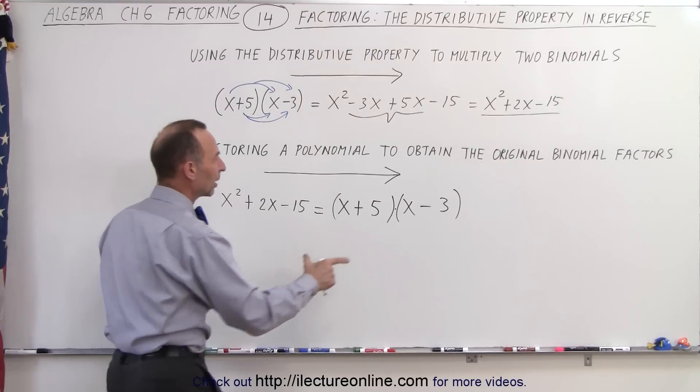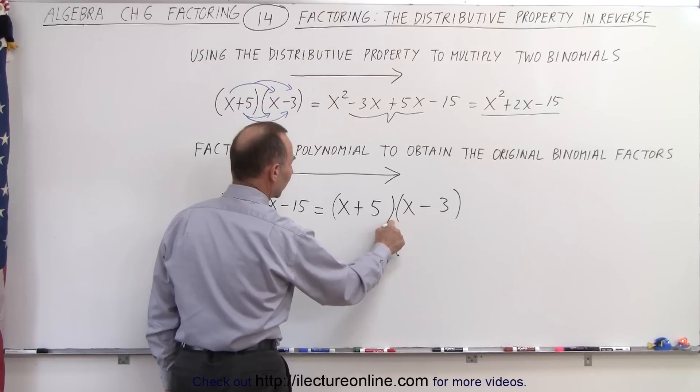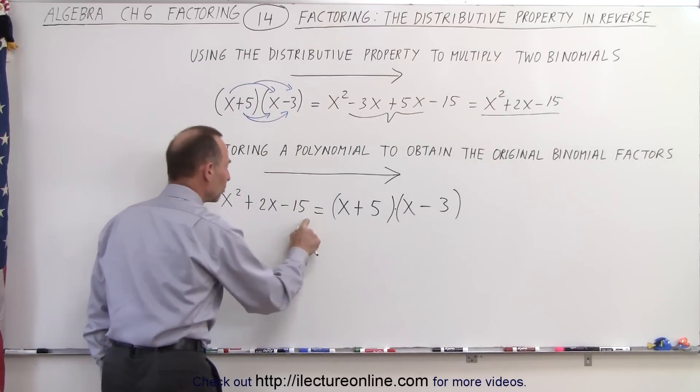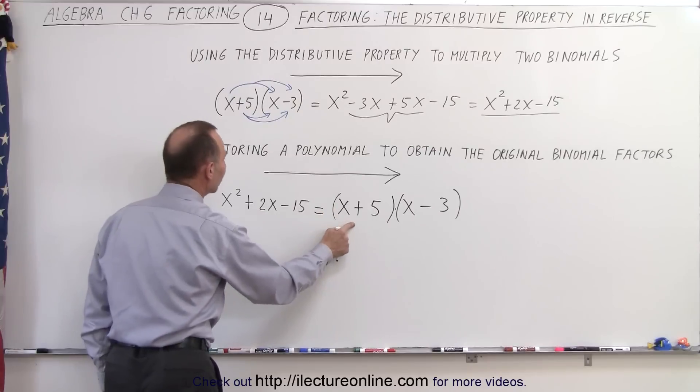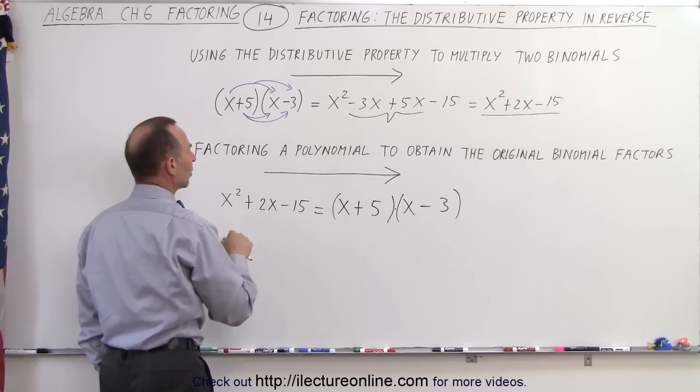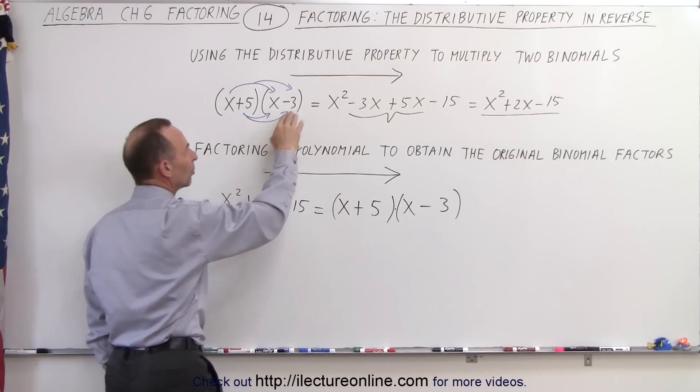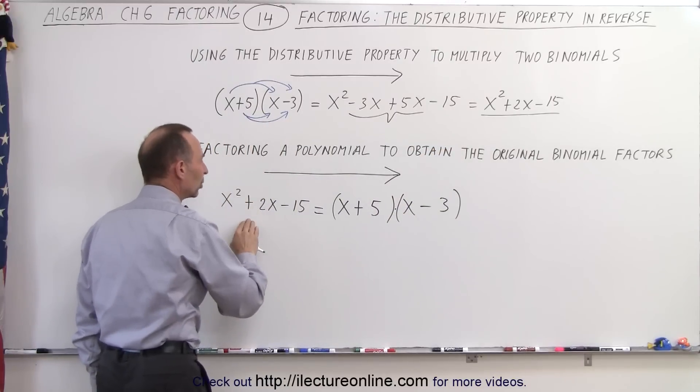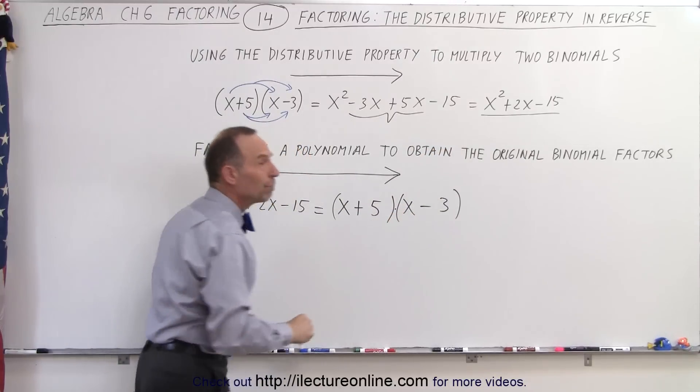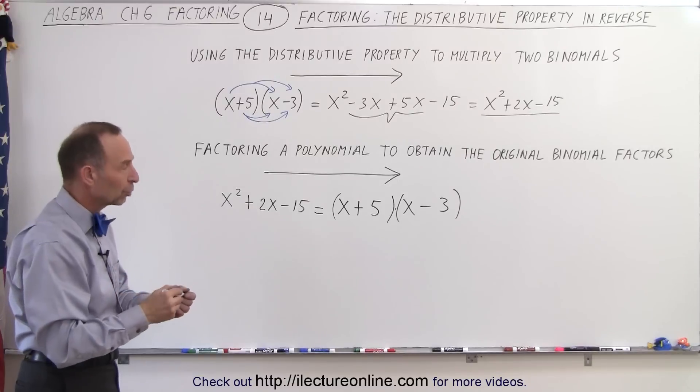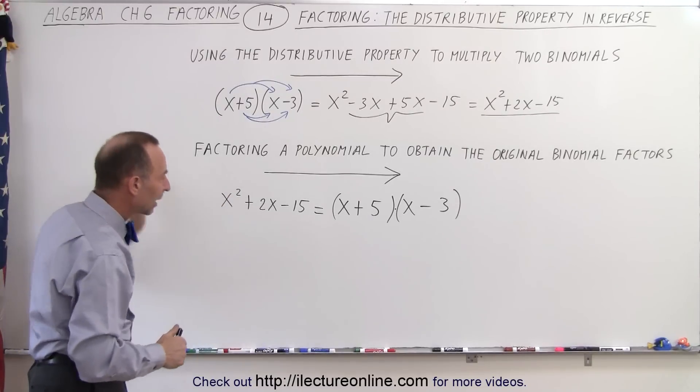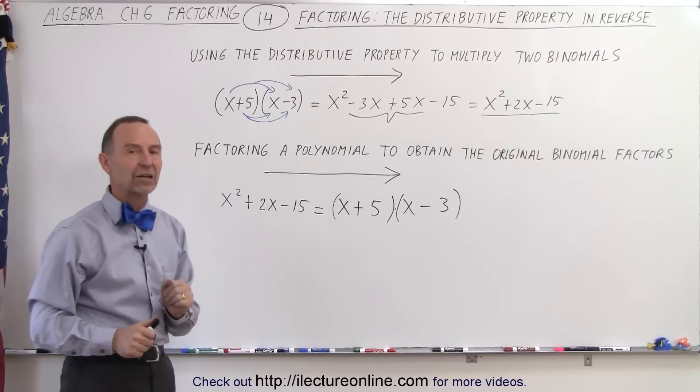But notice if I now take a look at these two binomials that are multiplied together, essentially the two factors that make up this trinomial, they're exactly the same as the two that I started with over here. So when we multiply these together, we get a polynomial. When I factor the polynomial, I get back the original two binomials, the two factors in binomial format that are equivalent to the polynomial. And that process is called factoring.